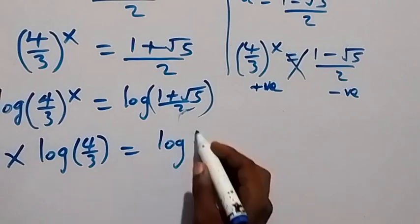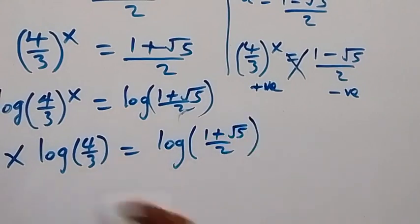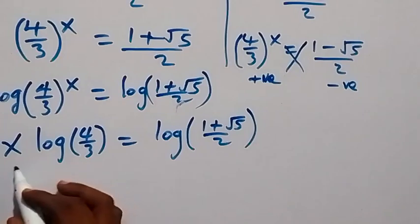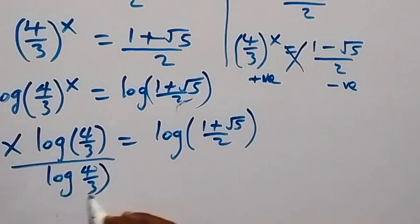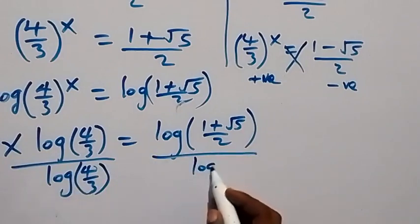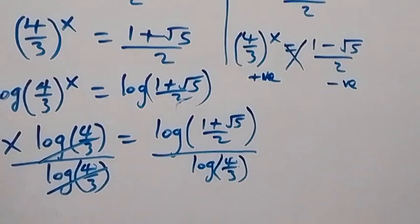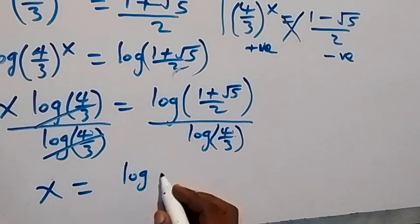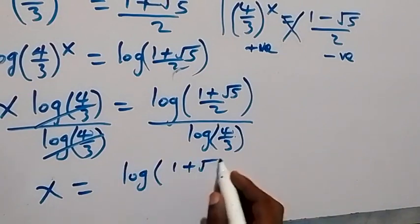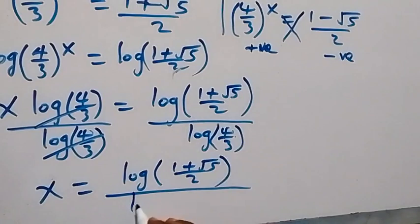Then to remove log(4/3), we divide both sides by log(4/3), which cancels out, leaving x equals log((1 plus root 5)/2) divided by log(4/3). We can separate the denominator as log 4 minus log 3.